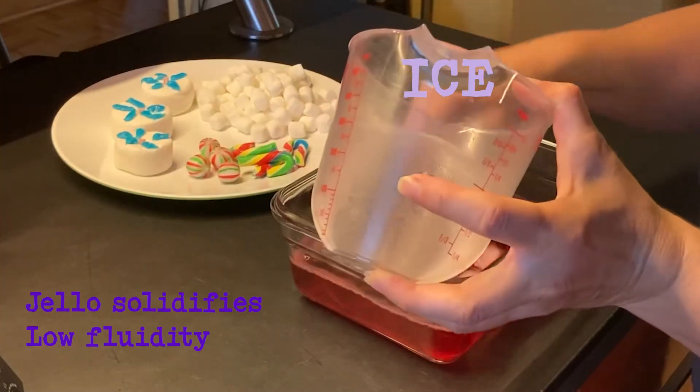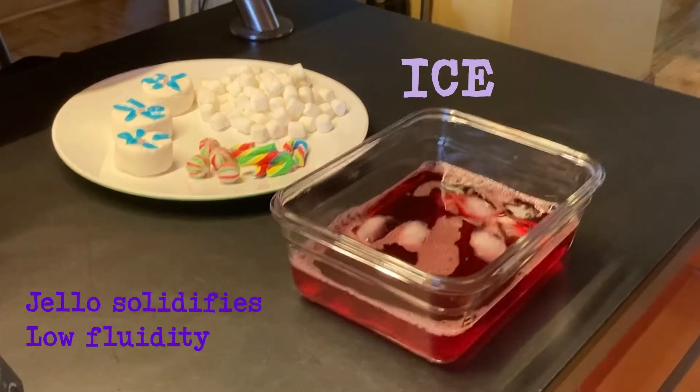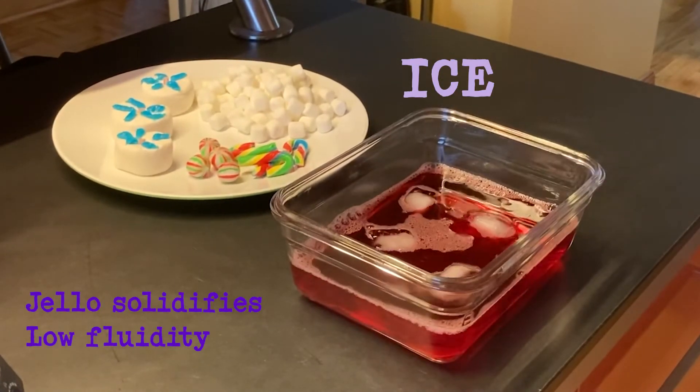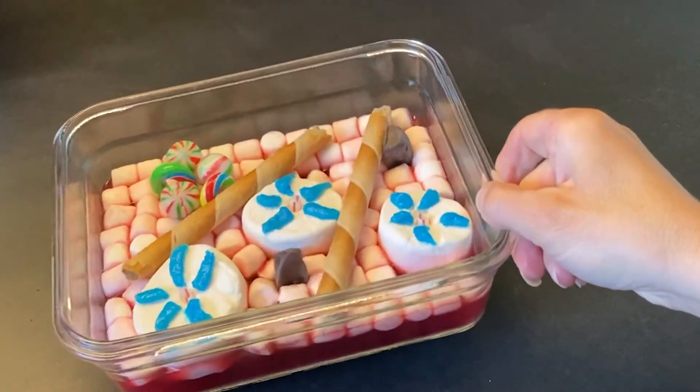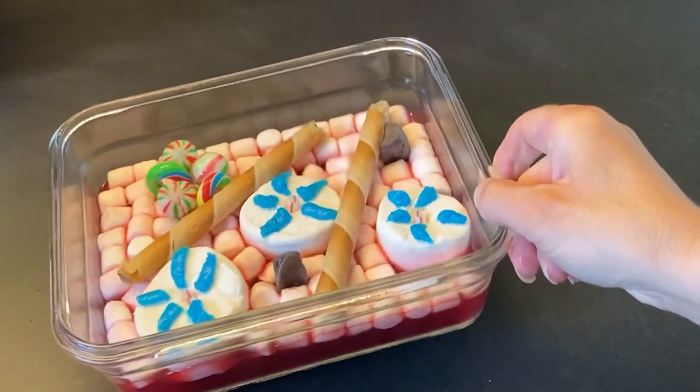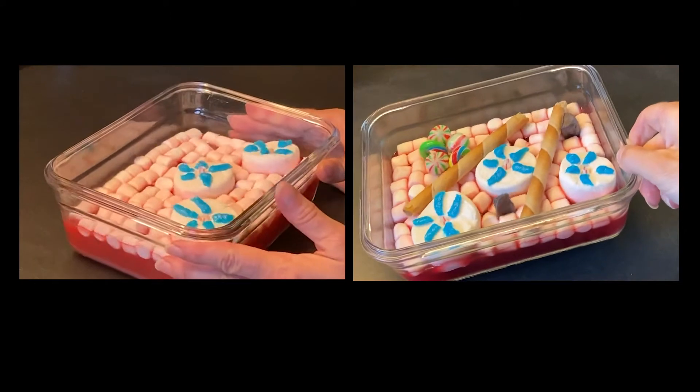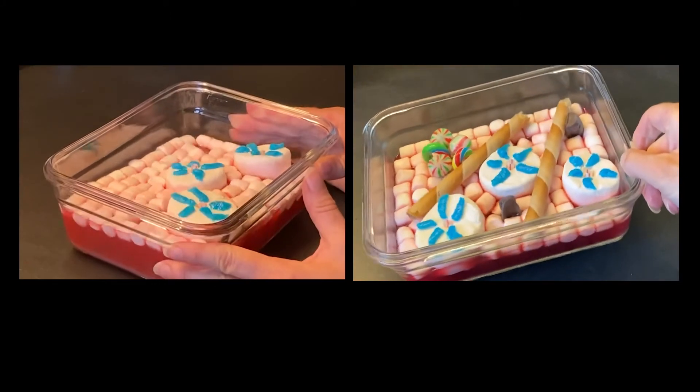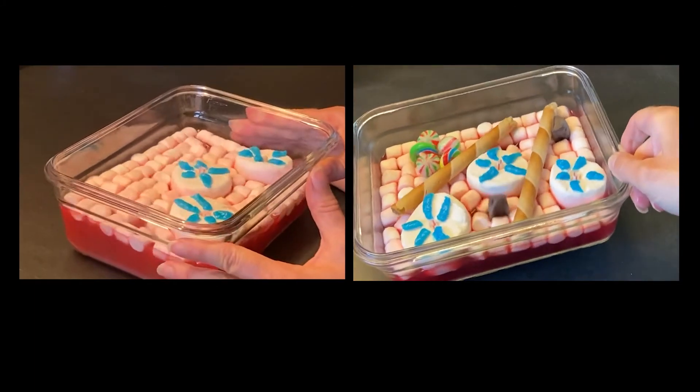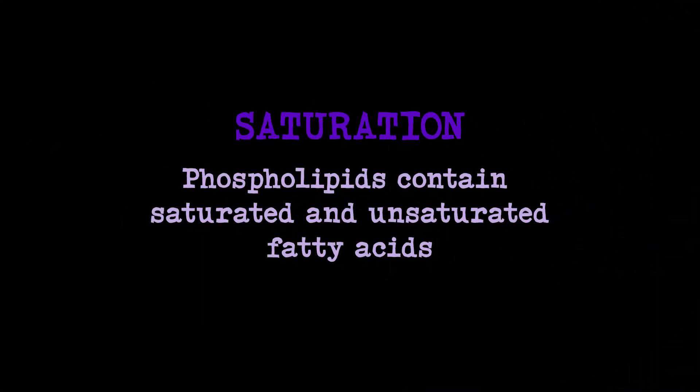Then at a lower temperature it is less fluid. Again, marshmallows on top represent the polar heads of our phospholipids, but they have a minor influence on the fluidity state, which is determined by the fatty acid layer consistency.